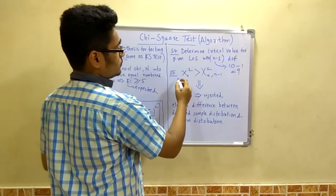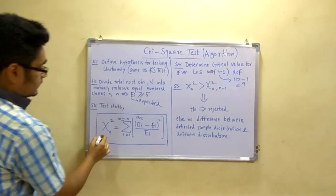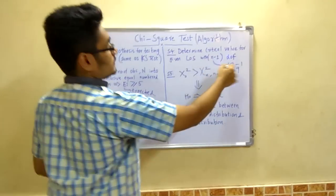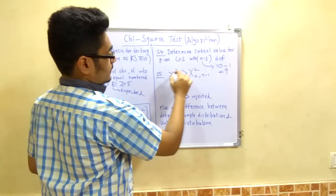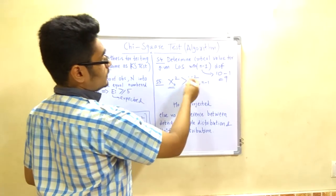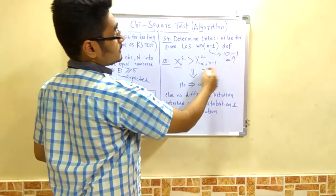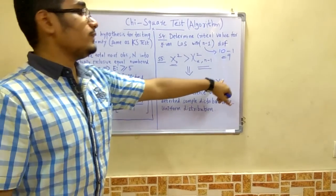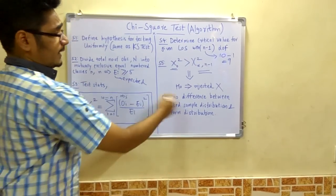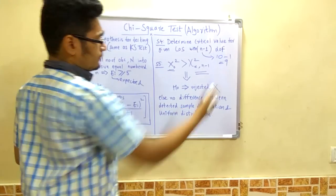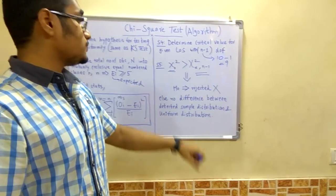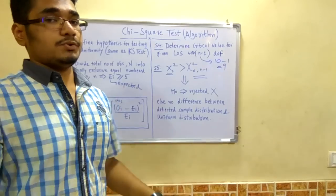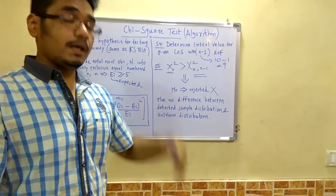Next, you have to compare this calculated value with the determined threshold value. If this calculated value is much greater than this threshold value, you will reject the hypothesis H0. Else, you will state that there is no difference between the detected sample distribution and the uniform distribution, meaning you will accept the hypothesis.